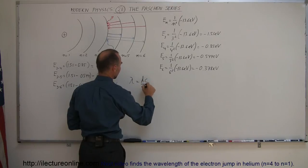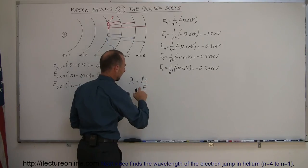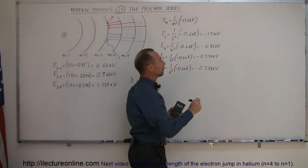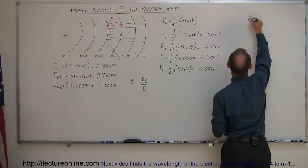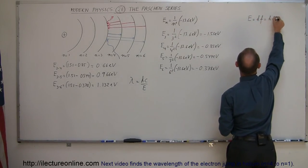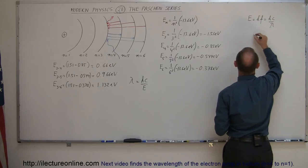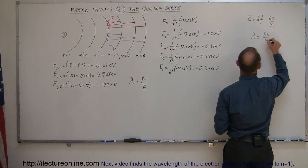Where does that come from? Well, we know that the energy of a photon is equal to h times the frequency, which is equal to hc over lambda. Solving this for lambda, we see that's equal to hc over the energy difference.